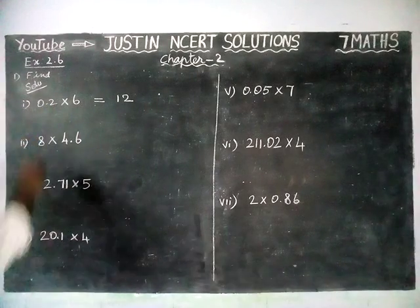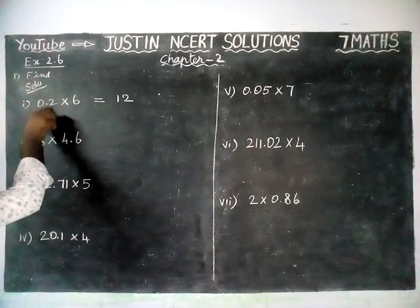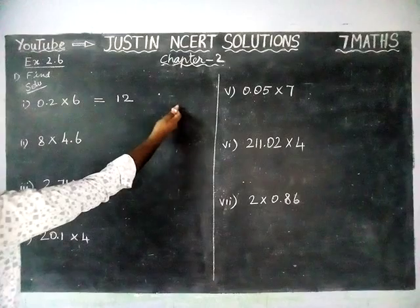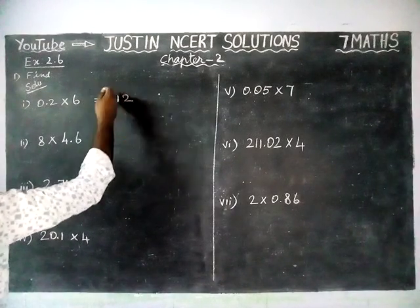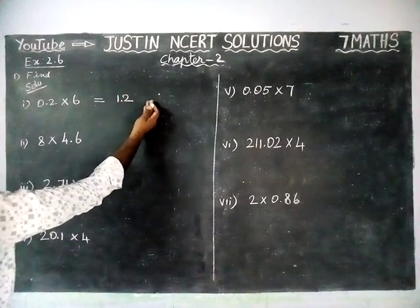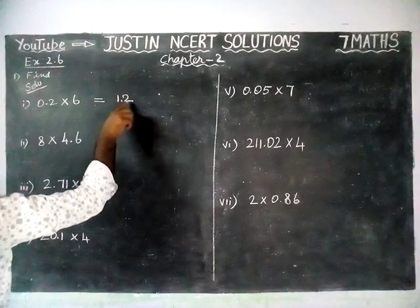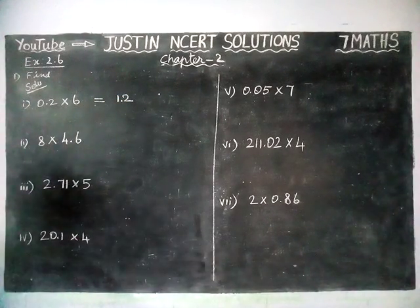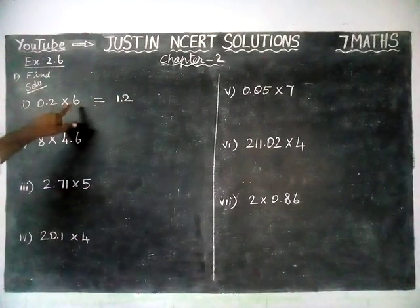And here we have one decimal point. In decimal place, we have only one decimal place. So from right hand side, we have to move left hand side one digit. From right hand side, we have to count one digit, one digit is 2. So that is 1.2 is the answer for 0.2 into 6.